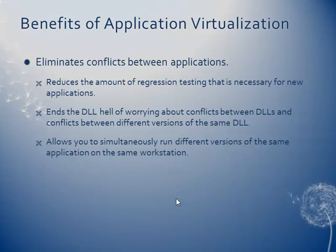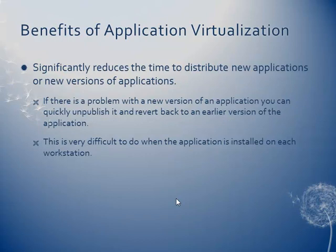It also allows you to simultaneously run different versions of the same app on a workstation. If you've ever tried to run different versions of Access, you know exactly what I'm talking about — it's just not fun to do. It also significantly reduces time to distribute new applications or new versions. The big thing is this: if there's a problem with a new version, all you do is unpublish the problematic version and republish the earlier version and you're good to go. Try that when you're trying to roll out a new app to a couple hundred or even thousands of workstations — it's not that easy. But with application virtualization, you just swap the EXE files and you're done. It's so much easier.